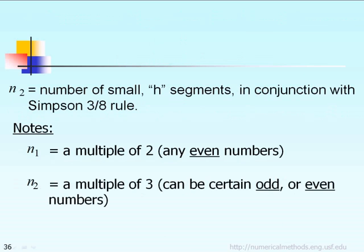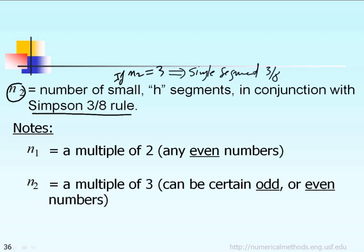The user has to specify n2, which is the number of segments in conjunction with Simpson 3/8 rule. If n2 equals 3, it simply means single segment Simpson 3/8 rule. If n2 is 6, 9, or 12, that means multiple segment Simpson 3/8 rule.